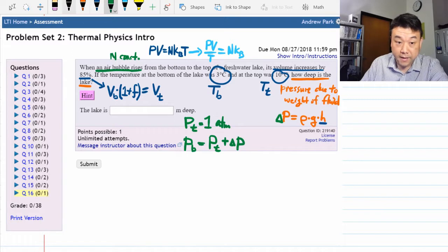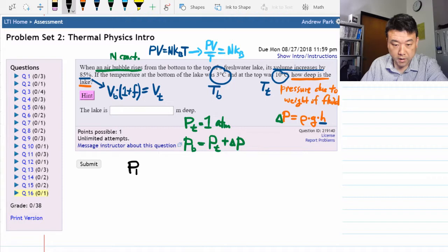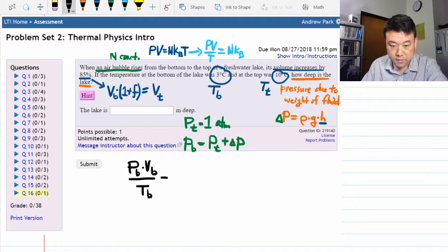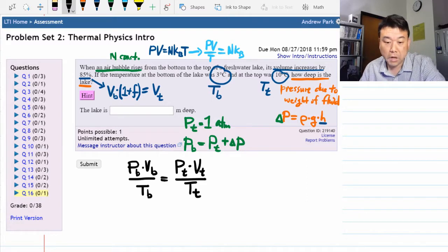Let's start by writing down that conservation law equation. So pressure at the bottom times volume at the bottom over temperature at the bottom is equal to pressure at the top times volume at the top divided by temperature at the top.